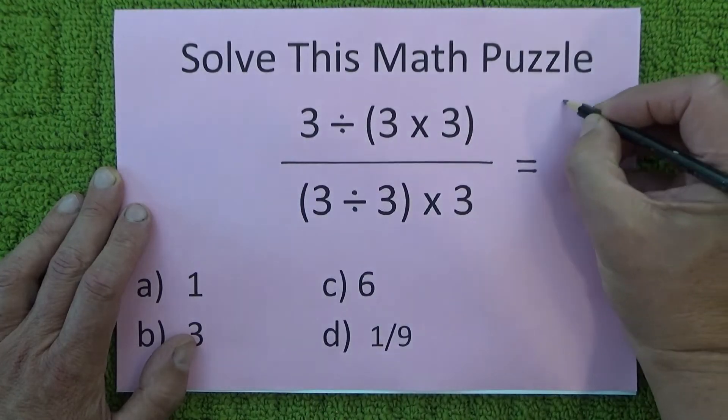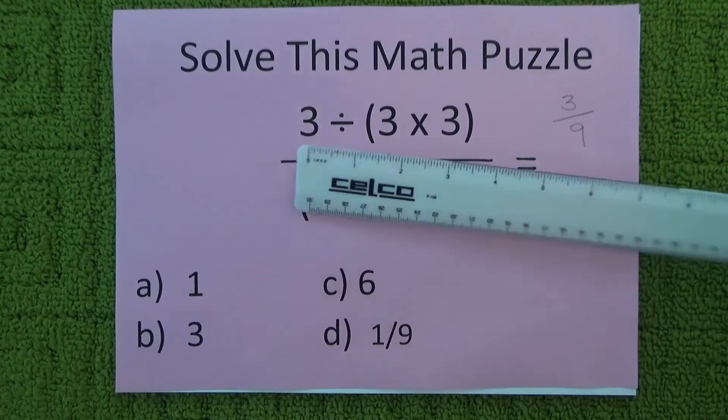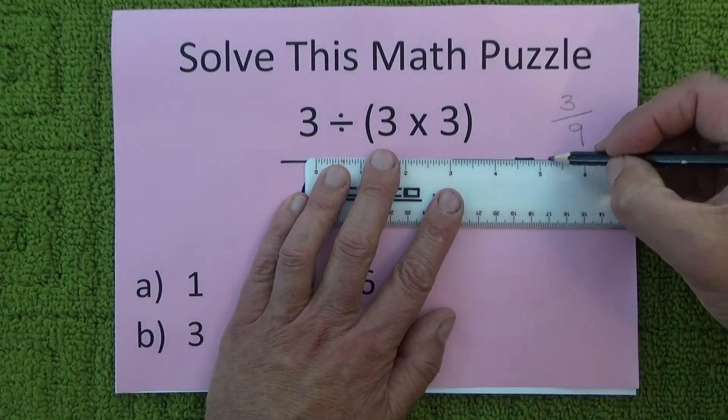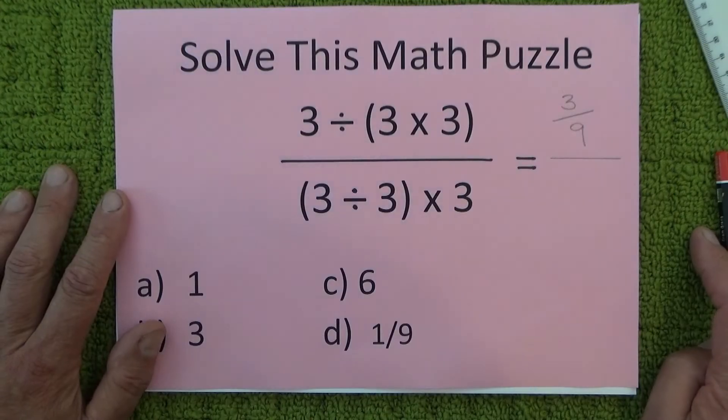3 divided by 9, and I'm going to express that as a fraction, and then that is going to be over whatever the bottom part of the fraction is.